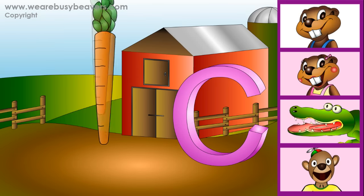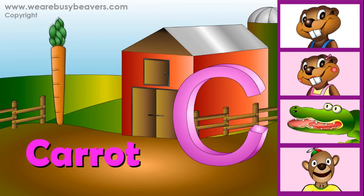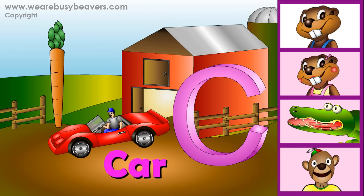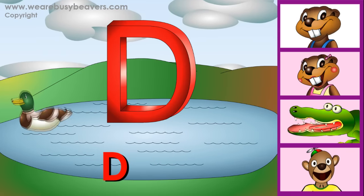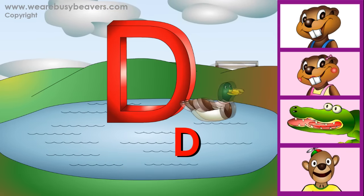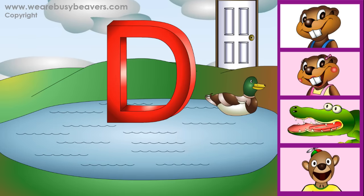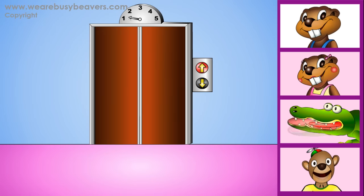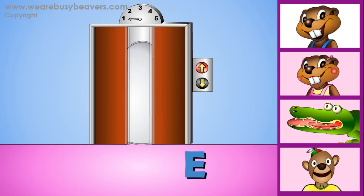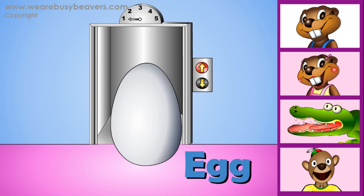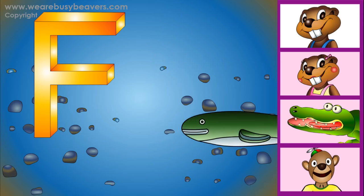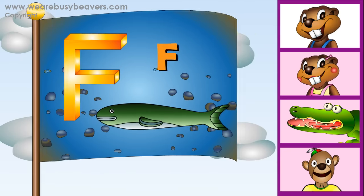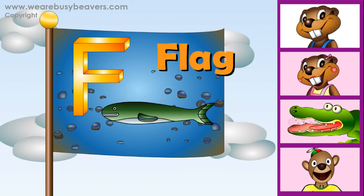It's a c-c-carrot. It's a c-c-car. It's a duck-duck. It's a duck-duck door. It's an elevator. It's an egg. It's a f-f-fish. It's a f-f-flag.